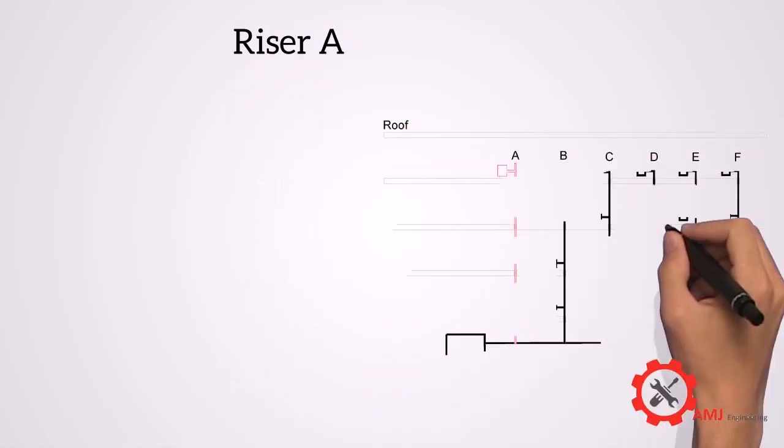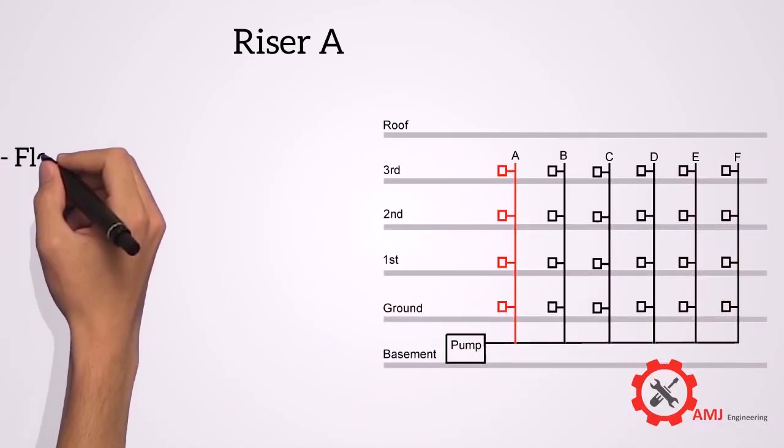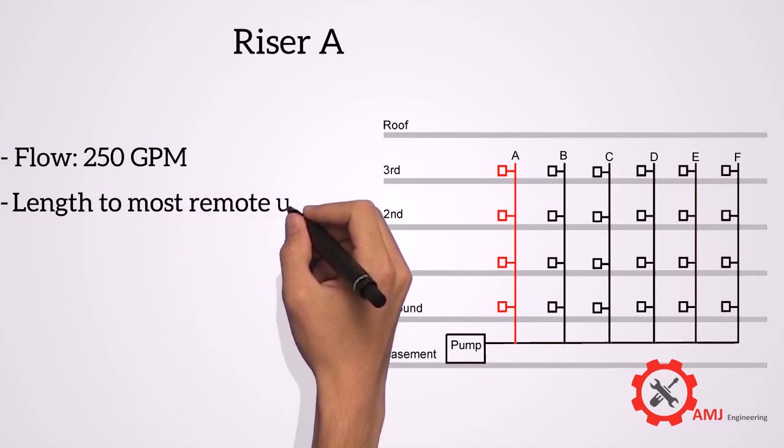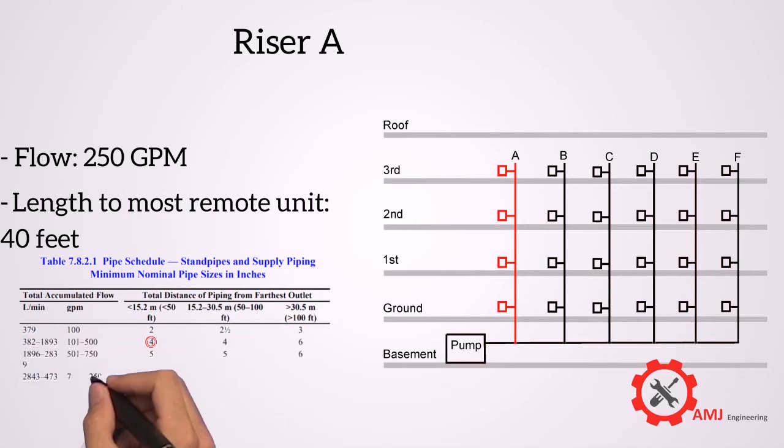For riser A, the flow is 250 GPM, the length to most remote outlet on riser A is 40 feet. So from the table the required pipe size is 4 inches.